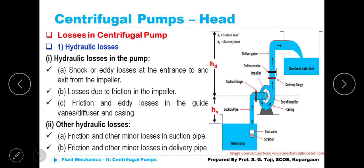Hydraulic losses in the pump. Shock or eddy losses at the entrance and exit from the impeller. Losses due to friction in the impeller. Friction and eddy losses in the guide vanes, diffuser and casing. These are the reasons why hydraulic losses do take place. Shock or eddy losses at the entrance and exit of the impeller. Losses due to friction in the impeller. Friction and eddy losses in the guide vanes, diffuser, also known as diffuser and casing.